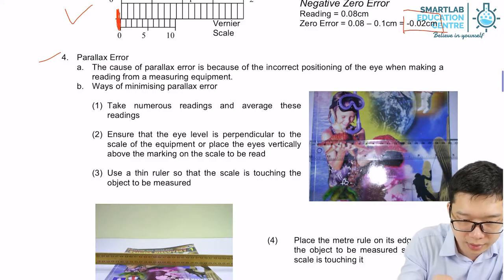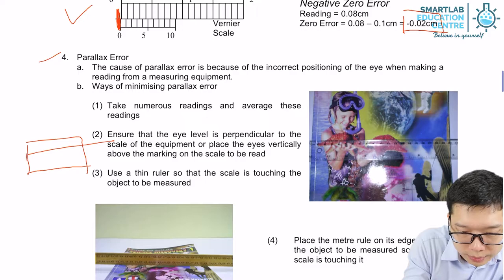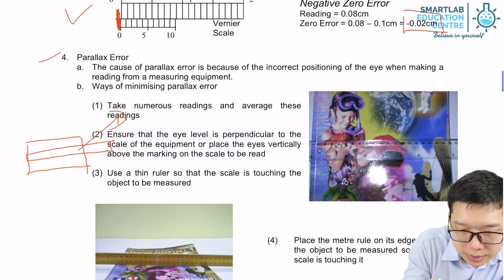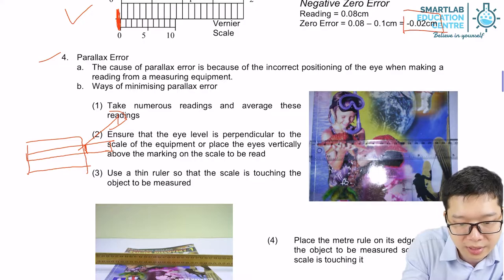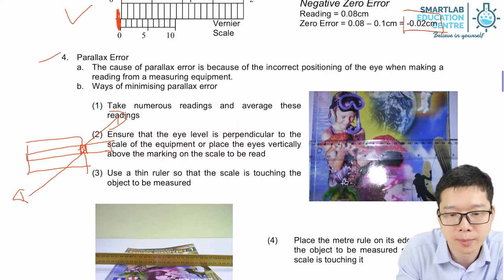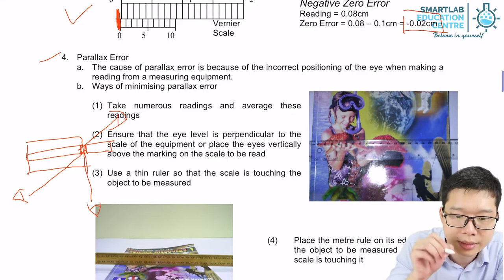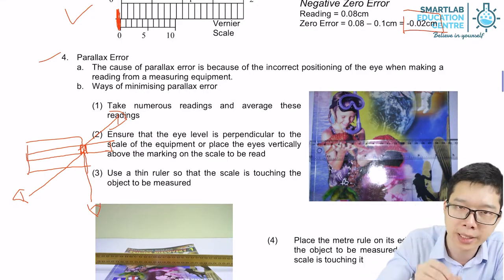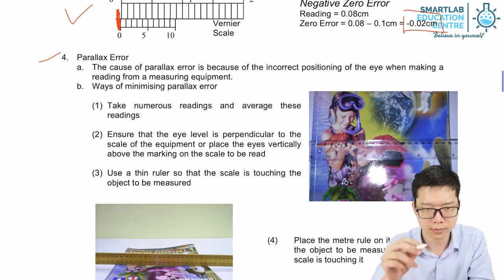So if I draw here, let's take over here. If that's the object I'm going to measure and that's my ruler, if I'm trying to observe from here, you actually get the reading over here which is actually longer. If I'm trying to read from here, you are actually getting the reading over here. Only if you get the reading from here, directly above the marking, then you can get the actual reading.